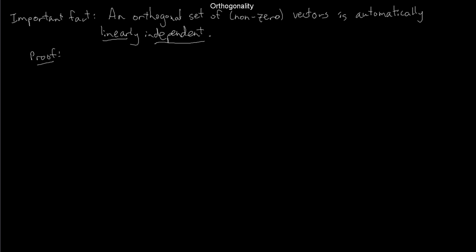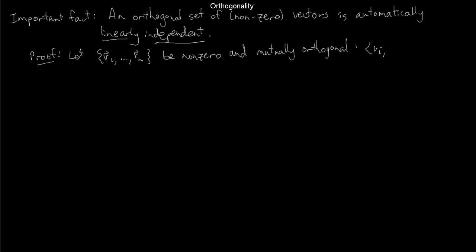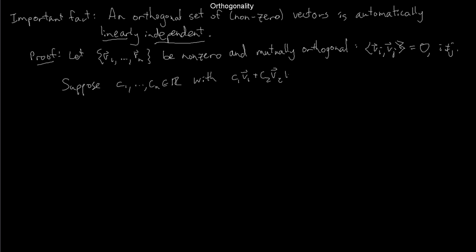Here's the proof. Let v1 through vn be n non-zero and mutually orthogonal vectors, so vi·vj = 0 for every i ≠ j. To show they're linearly independent, suppose some scalars c1 through cn satisfy c1v1 + c2v2 + ... + cnvn = 0. I need to deduce that all the ci's are zero. For every i, take vi dotted with this linear combination — that's vi·0 = 0.